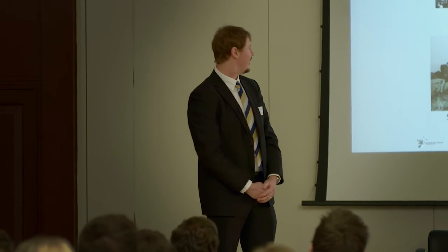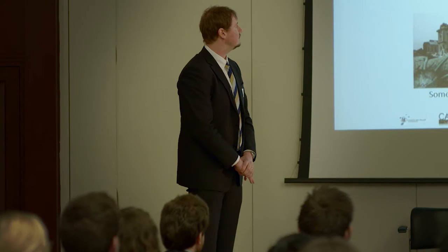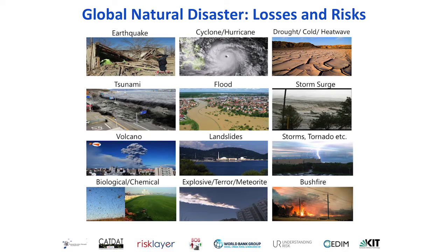Disasters are everywhere, natural and otherwise. Some have happened already, some may happen but hopefully won't, some are very likely to happen such as an earthquake in Adelaide, and some will happen, like the impending earthquake in Istanbul. Natural disasters come in all shapes and forms — some are meteorological, some hydrological, geophysical, biological and chemical. Over the last decade, I've been collecting loss data as well as socioeconomic metrics to try and explain some of the trends in natural disasters globally.